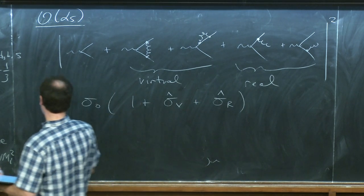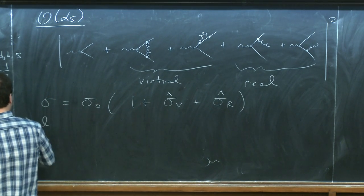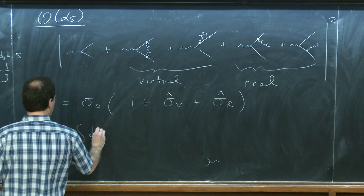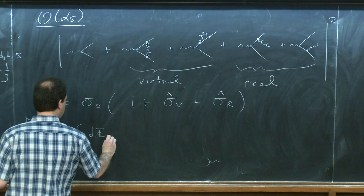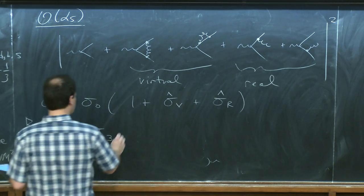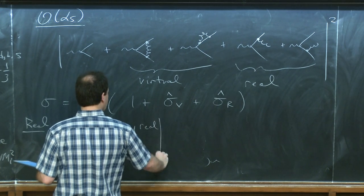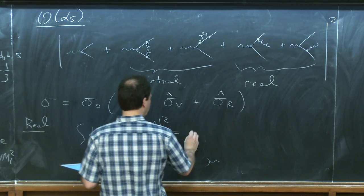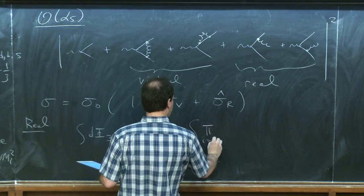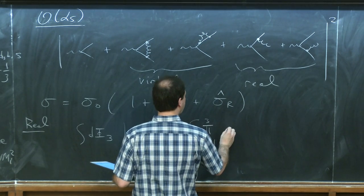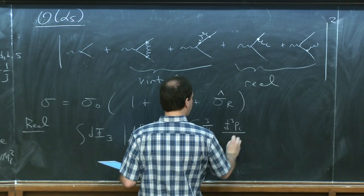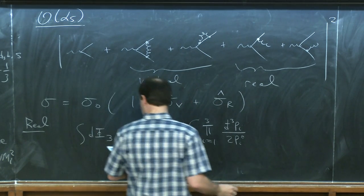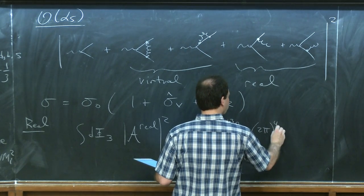Let's study the real emission diagrams first. To calculate the real contribution, I do a phase-space integral over a three-body final state phase space and then take my amplitude for the real process and square it. There are three particles in the final state; for each particle I integrate over its three-momentum. It's an on-shell particle, so there's a factor of energy in the denominator of the phase-space measure, and there's a momentum-conserving delta function saying the total momentum Q from the virtual photon equals the sum P1 plus P2 plus P3 of the final state particles.